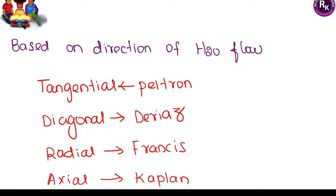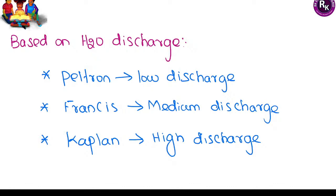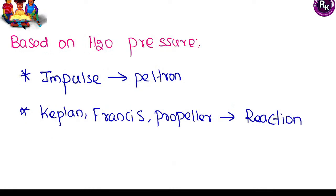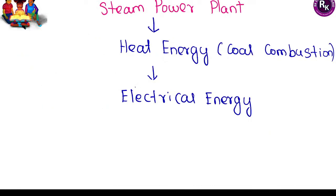Different types of turbines are used in alternators based on water flow direction. For tangential flow we use Pelton turbine, for diagonal flow we use Deriaz turbine, for radial flow we use Francis turbine, and for axial flow we use Kaplan turbine. For low-level discharge, Kaplan is used; for high discharge, Francis or Pelton are used.